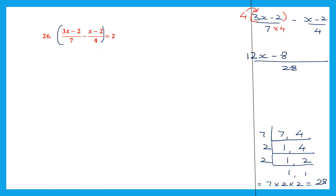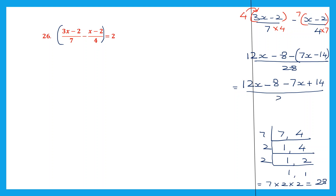Now let's go to the second fraction. 4 7s are 28, so I multiply this by 7. Now since I have a minus sign, I have to put the minus sign and the rest within brackets. 7 into x is 7x. 7 into minus 2 is minus 14. Now let's open the brackets. So 12x minus 8. If you see minus before a bracket, the sign of all the terms inside will change. So it becomes minus 7x plus 14, the whole thing divided by 28.